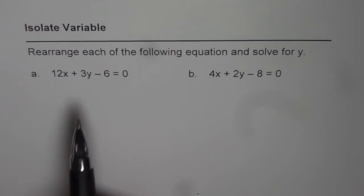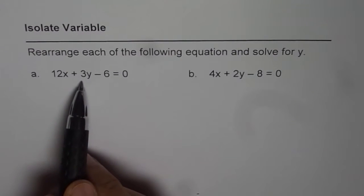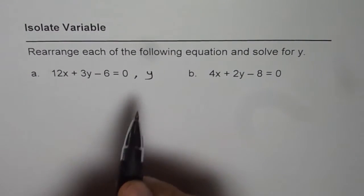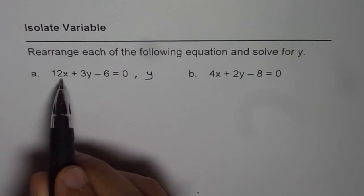These are similar equations. I will do one, you follow the same method and solve the other one. That would be a practice question for you. So let's start with 12x plus 3y minus 6 equals 0. We need to isolate y. That means we need to find the value of y in terms of x.